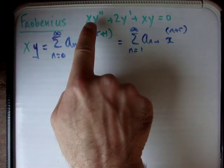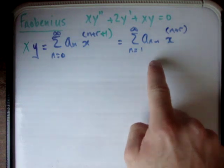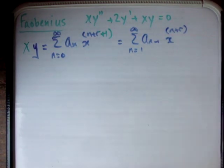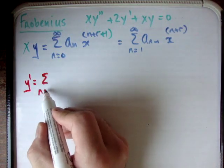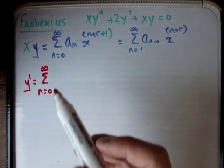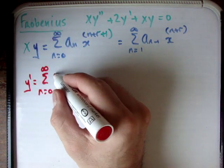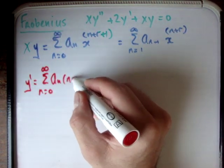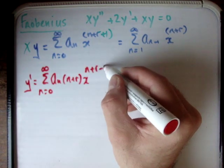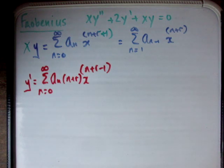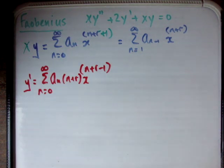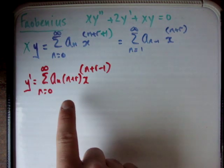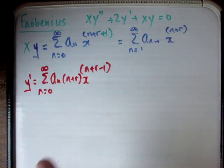From now on I'm putting everything in terms of n = 1 to infinity and x^(n+r). The next thing we need to do is differentiate the power series. So y' = sum from n = 0 to infinity of a_n · (n+r) · x^(n+r−1). Looking at our differential equation, we see we multiply by 2, so I'm going to shift this immediately to work with x^(n+r).